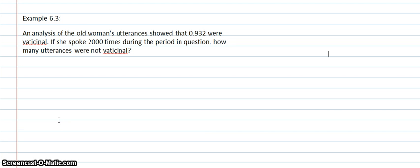Example 3 in Lesson 6 is a word problem. An analysis of the old woman's utterances showed that 0.932 were vaticinal. Now, if she spoke 2,000 times during the period in question, how many utterances were not vaticinal? Vaticinal means prophet-like or of a prophetic nature.